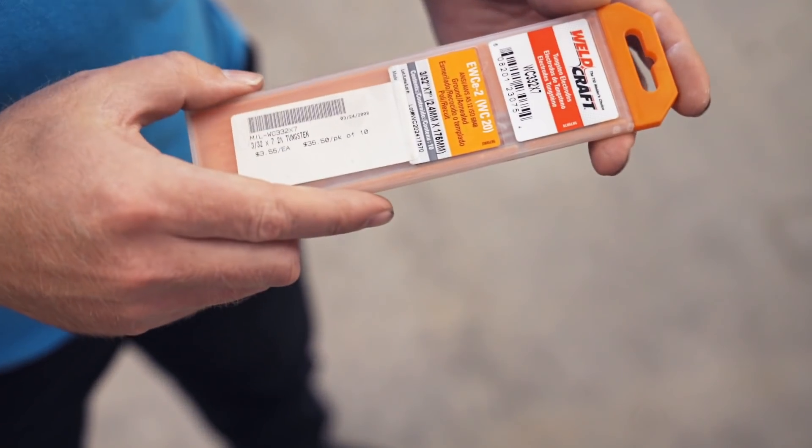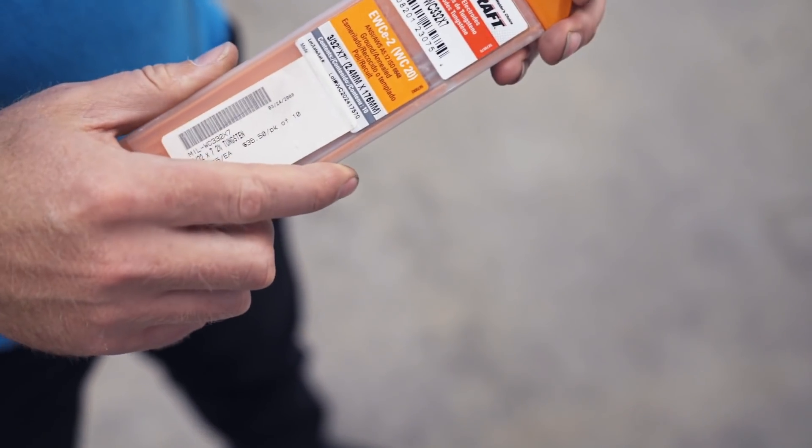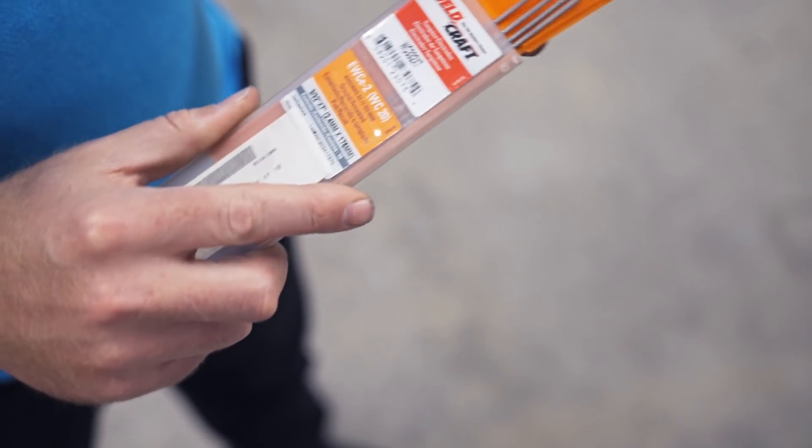Now right here I have a pack of 3/32nd tungsten from Weldcraft. This is the orange labeled kind.